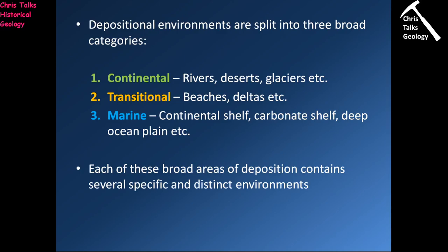Depositional environments fall into one of three broad groups. Continental environments are where sediment is deposited on the continents — environments like deserts, glaciers, rivers, and lakes, including freshwater environments. Transitional environments include beaches and deltas — locations that are sometimes submerged underwater and sometimes exposed to the atmosphere. Marine environments spend their entire time fully submerged in seawater — the continental shelf, carbonate shelves, the deep ocean plain, and so on. Each broad area contains several specific sub-environments.